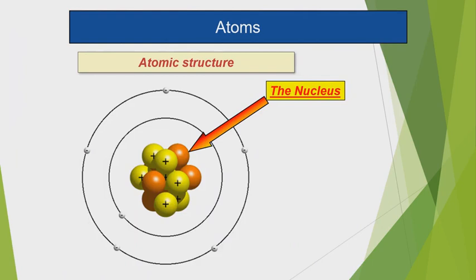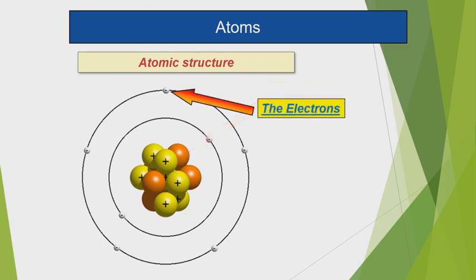The center of the atom — the nucleus — contains positively charged protons and chargeless neutrons. The outer part of the nucleus contains negatively charged electrons moving around the nucleus. Electrons move in a certain circular path called an orbit.